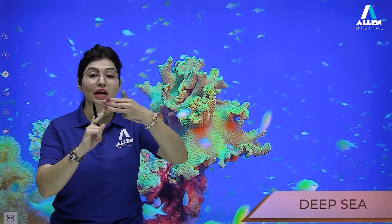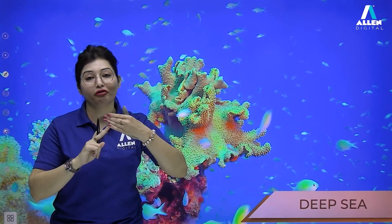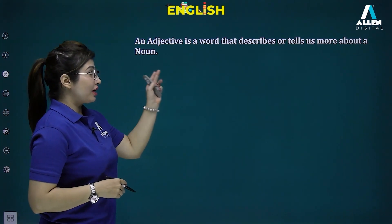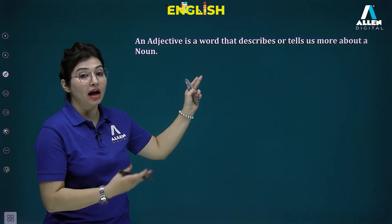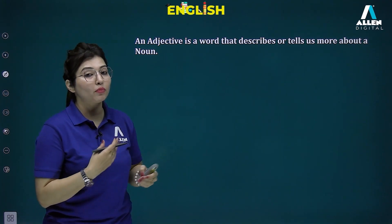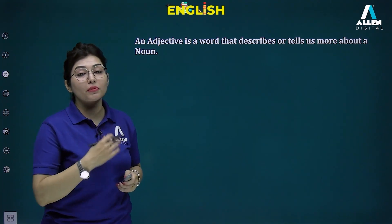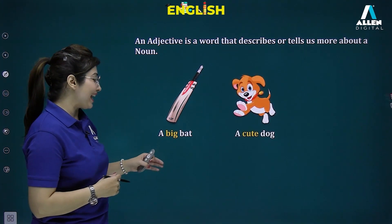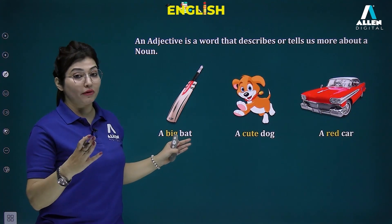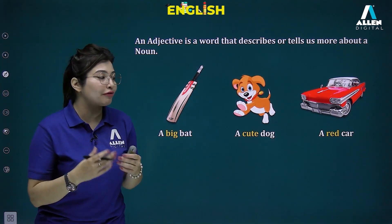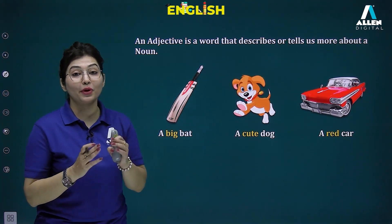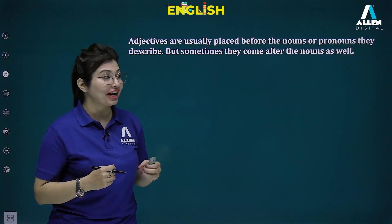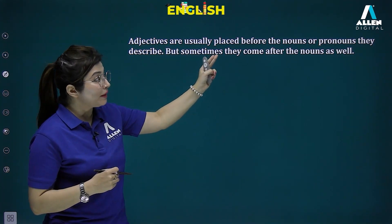We'll cover the definition, degrees of comparison, types of adjectives, and orders of adjectives. An adjective is a word that describes or tells us more about a noun — it modifies a noun, gives more information, and adds something to it. Examples: a big bad — talking about size; a cute dog — appearance; a red car — color.